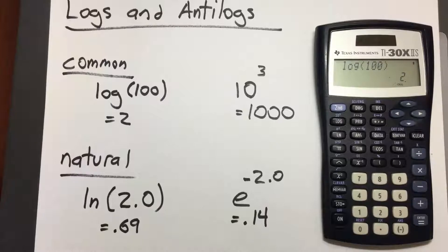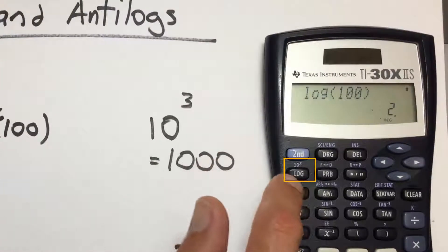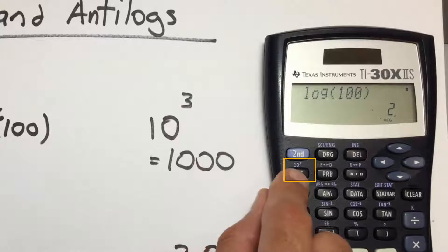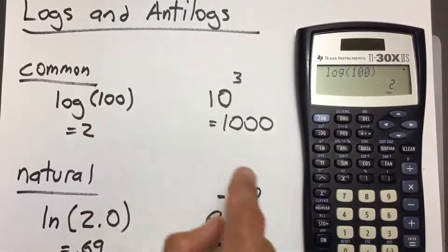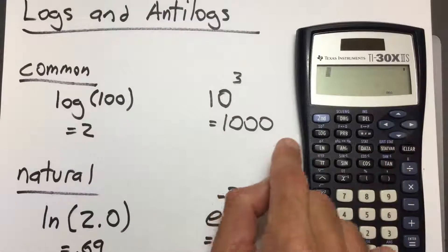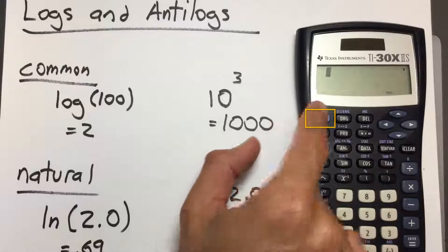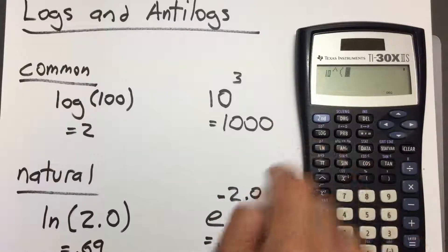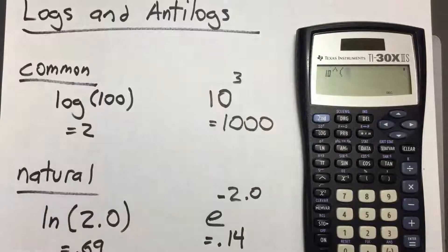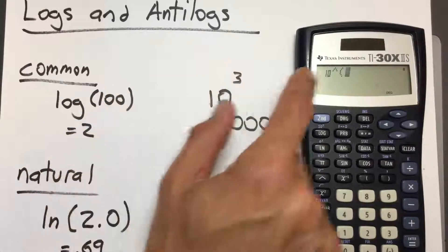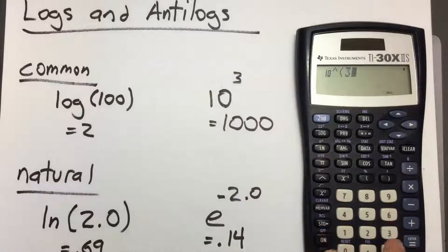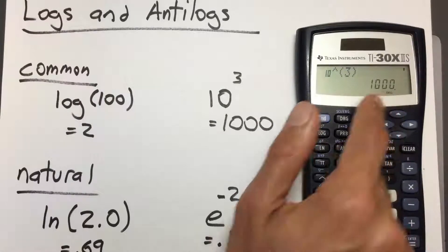To take the antilog, we use the same key. Above the log key we have 10 raised to the x — that's the same thing as an antilog. We'll clear our screen and press 2nd to reach the blue text, then 10 raised to the x. This adds 10 raised with parentheses on our screen. Inside the parentheses we enter 3, close the parentheses, and press enter. The answer is 1000 — correct.